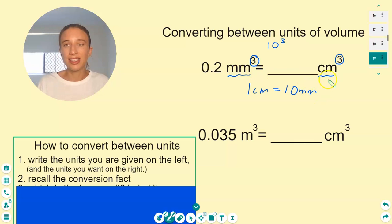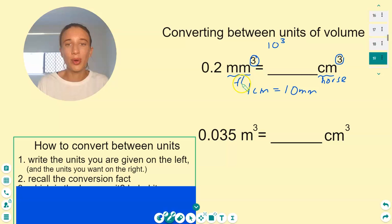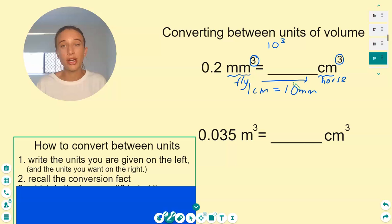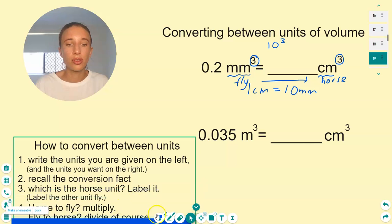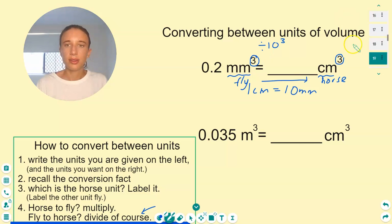Then we need to work out whether we multiply or divide by this conversion factor. Which is bigger — one centimeter or one millimeter? One centimeter is bigger, so that's the horse unit, which makes millimeter the fly. Fly to horse, divide of course. Into the calculator: 0.2 divided by 10 cubed gives 0.0002.